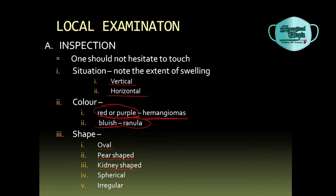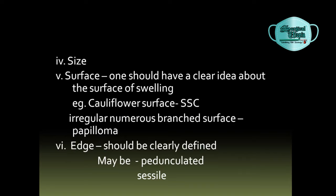The shape of the swelling may be oval, pear-shaped, kidney-shaped, spherical, or irregular. The size should be measured in its longest diameter. The surface of the swelling should be inspected — for example, in cases of squamous cell carcinoma it will be cauliflower-like, and irregular numerous branches will be present in cases of papilloma. The attachment of the swelling should be noted: it may be pedunculated or sessile.